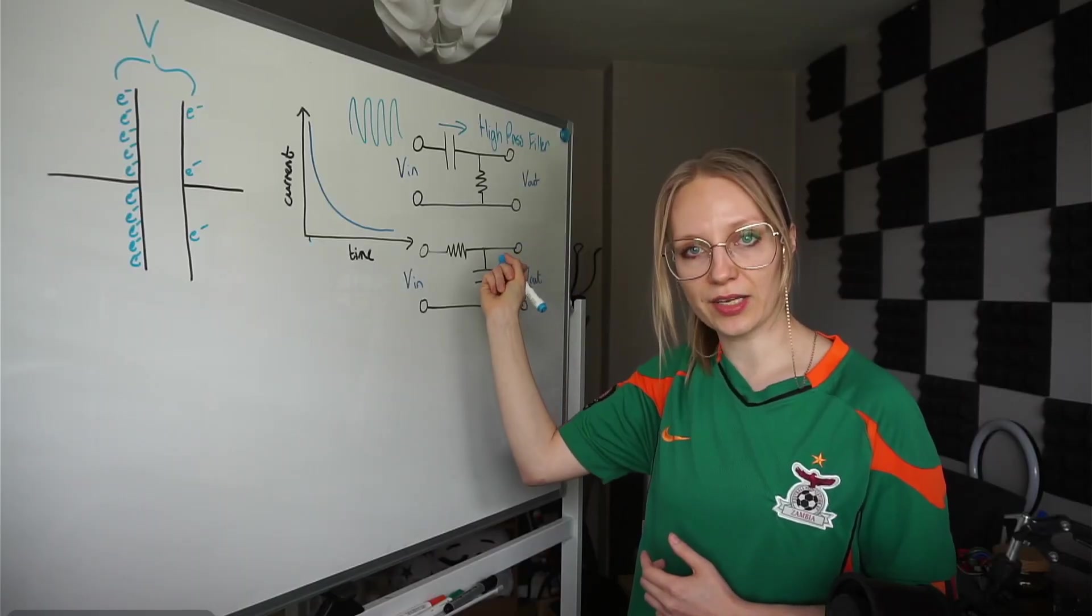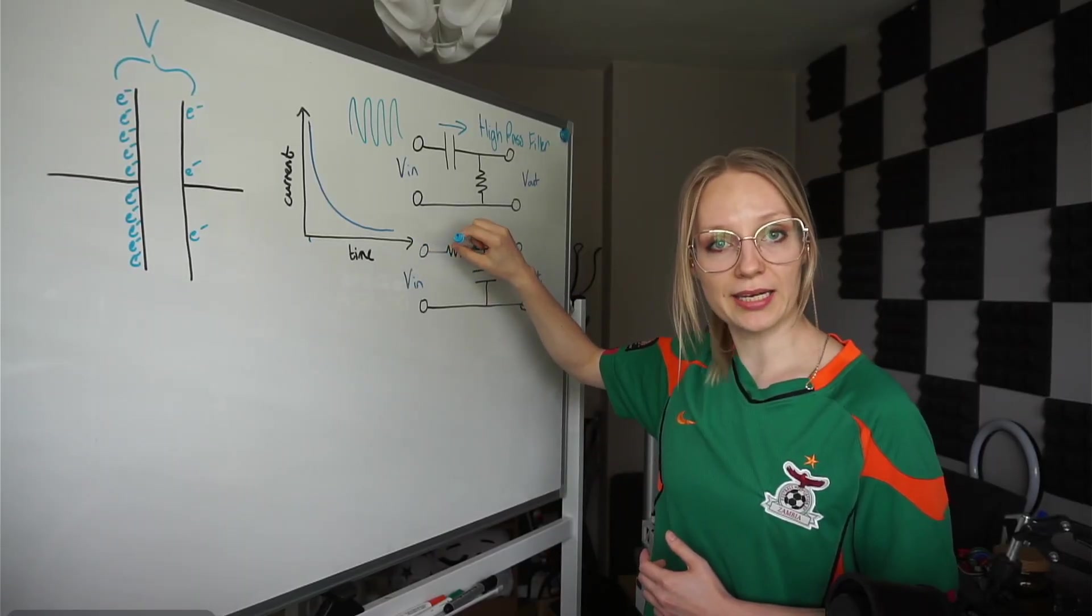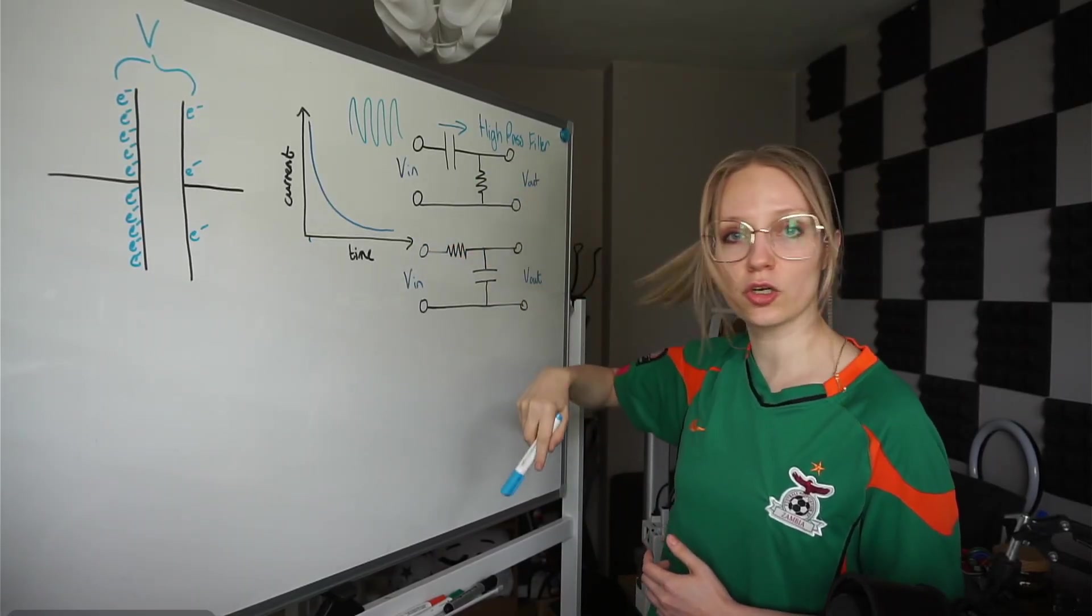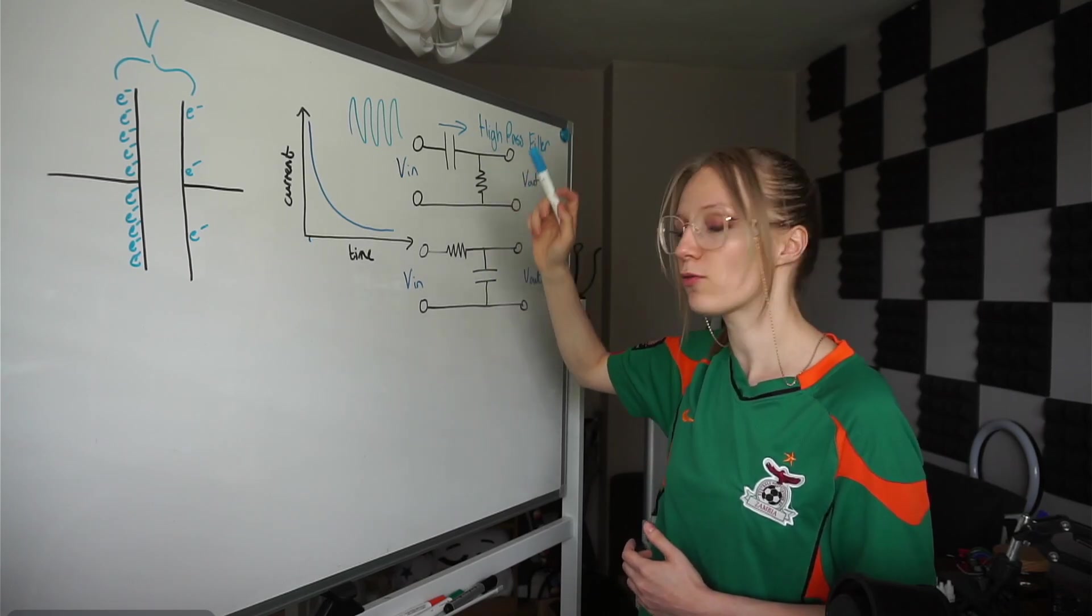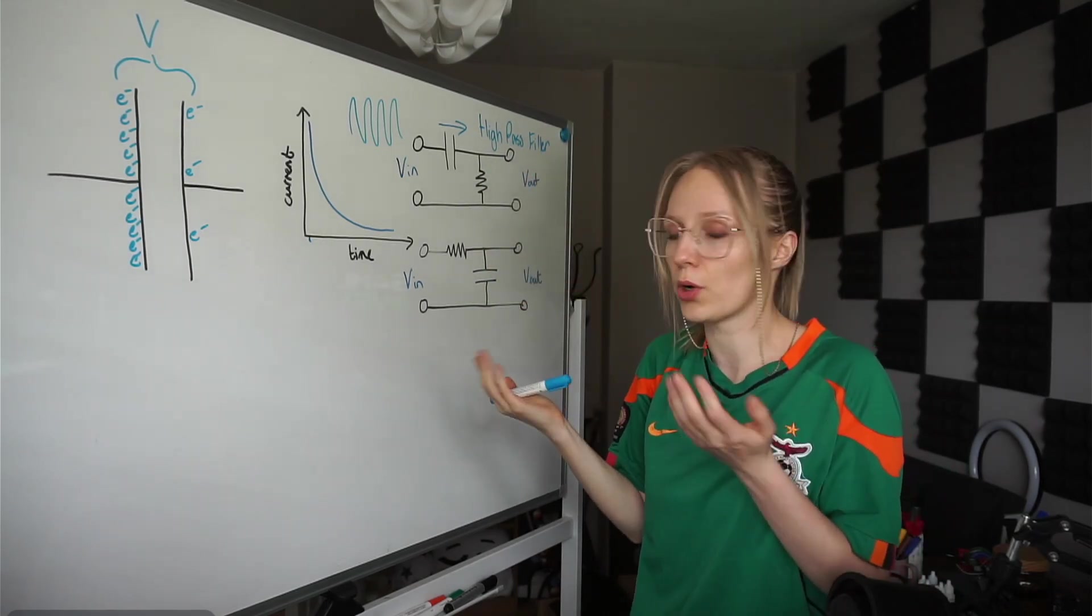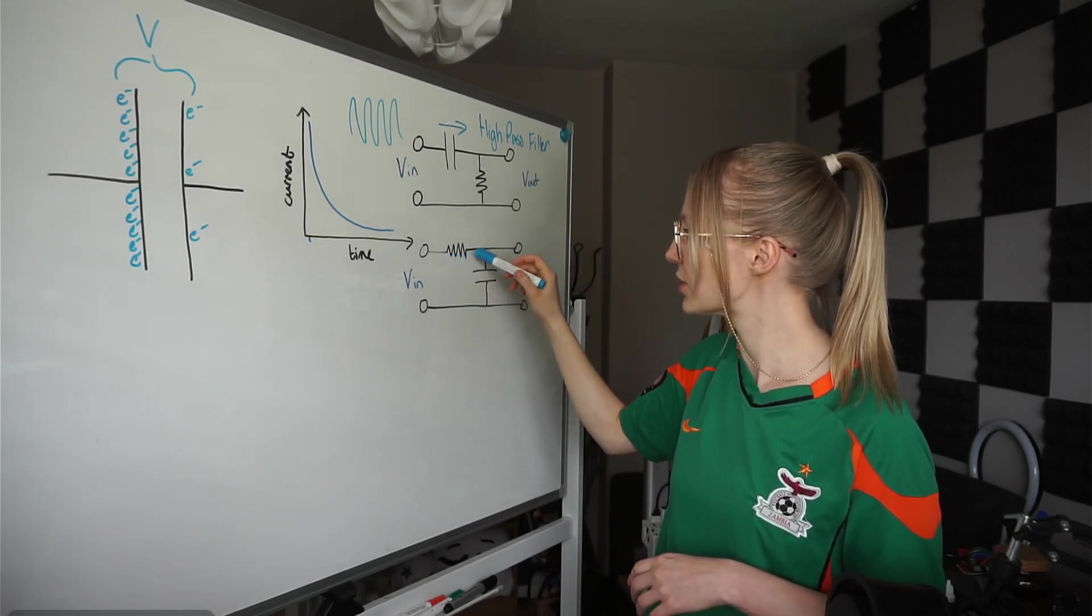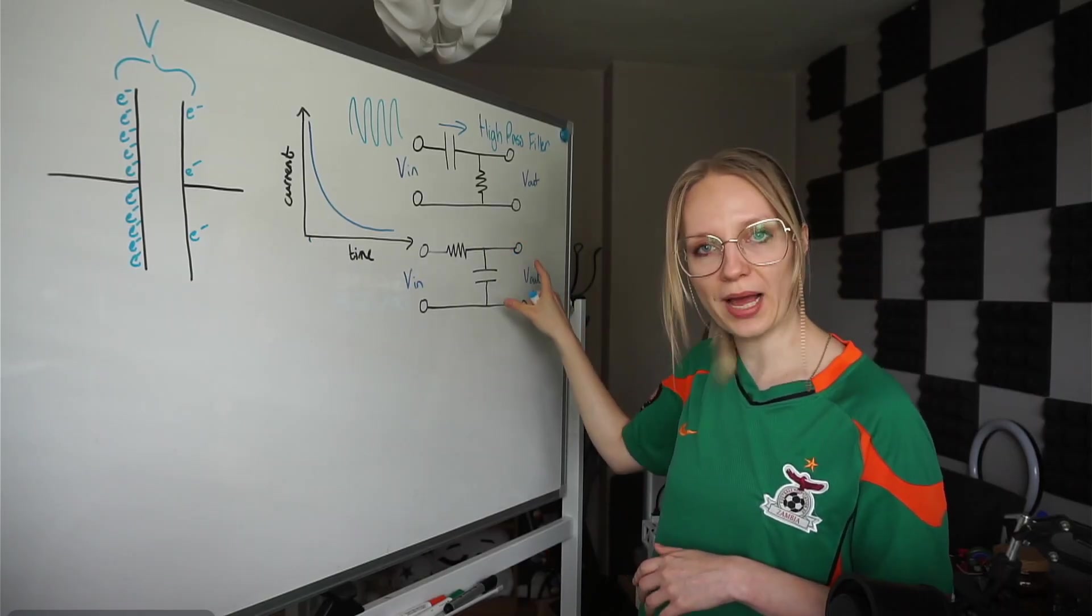Now, when we flip the resistor and the capacitor here, we have a wave coming in, as always, in the V in. And it could be a really high frequency wave or a really low frequency wave. We don't know. And there's two paths it can take.